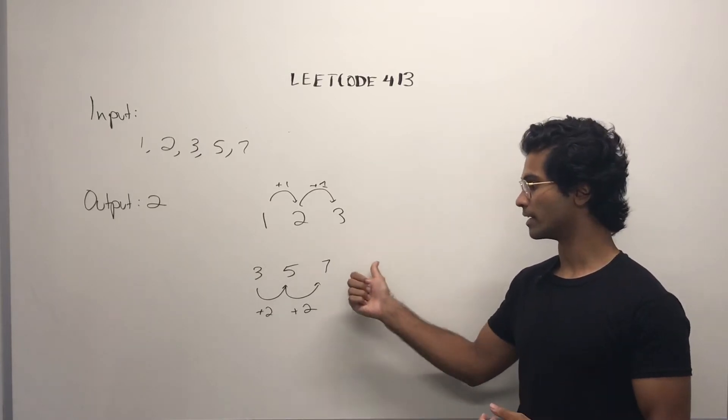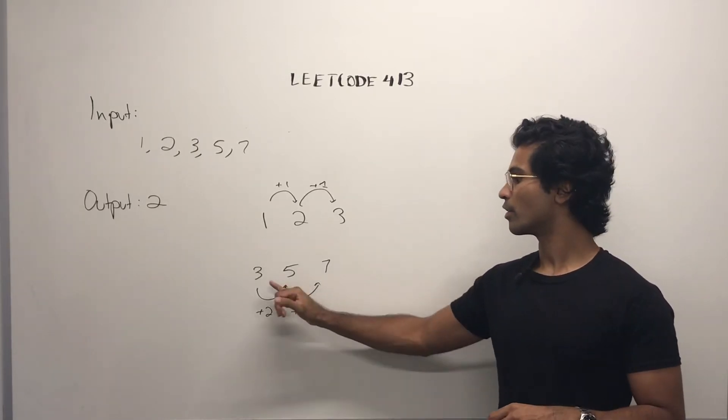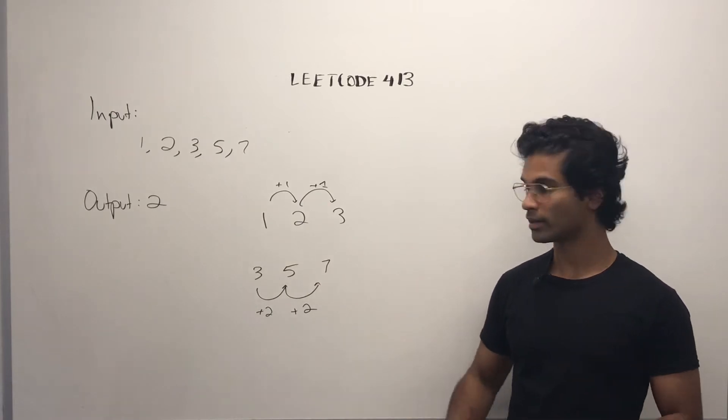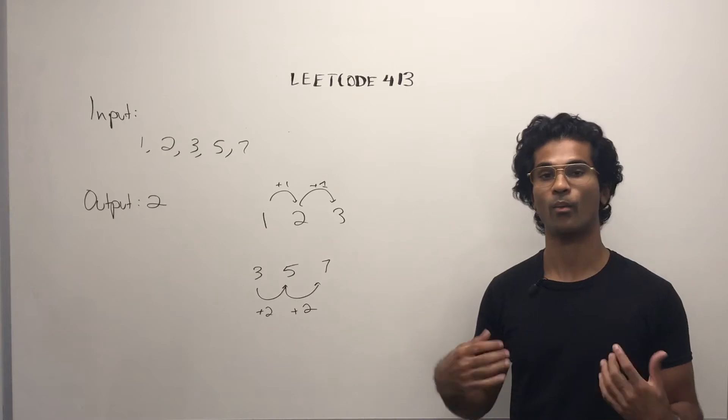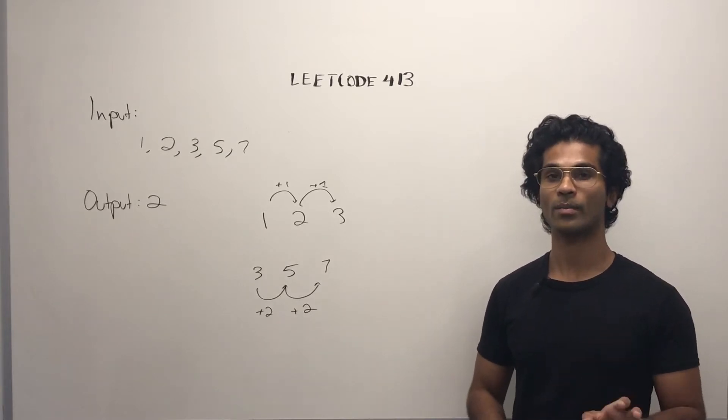But we have to count all of them. So if there was a 9 here, then 3, 5, 7 would be 1, 5, 7, 9 would be another, 3, 5, 7, 9 would be 1 more. Don't worry about that. We'll look at it in a couple of the diagrams and a few examples.